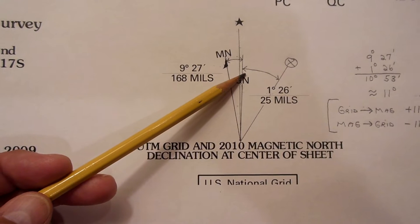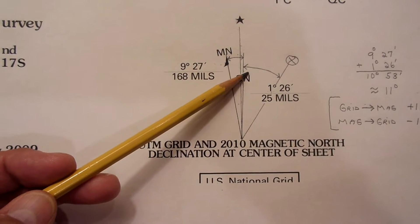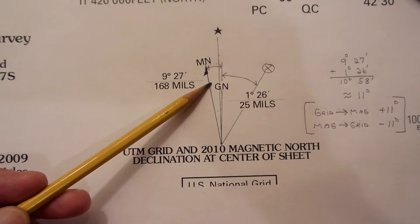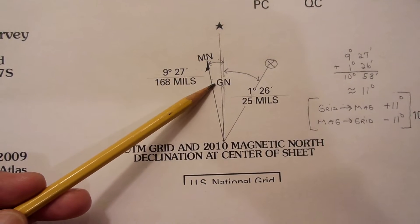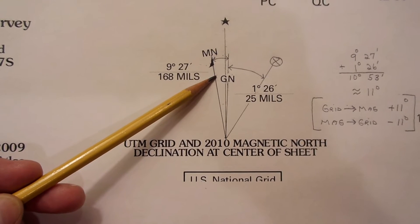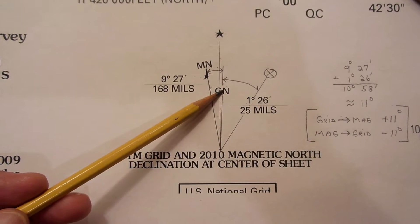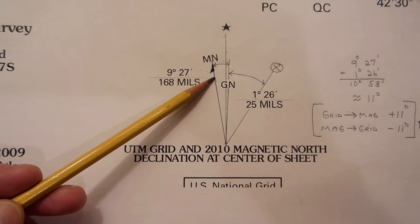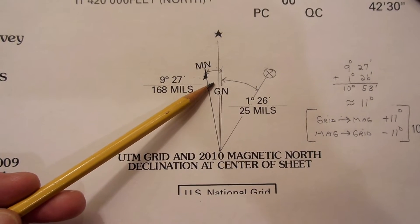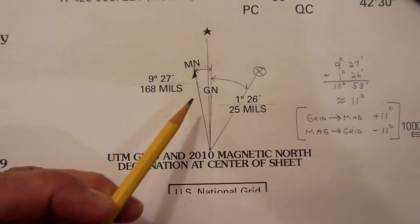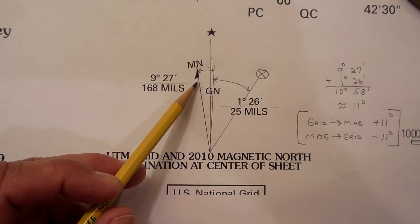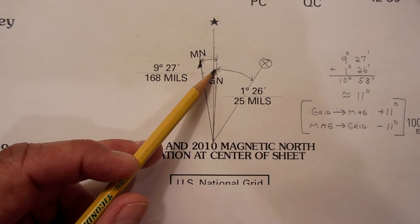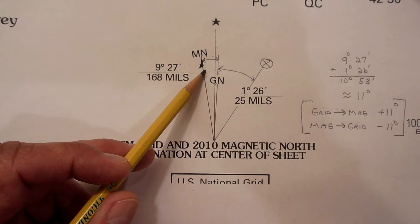So on this map grid north is slightly to the east of true north. But look at magnetic north. Magnetic north is 9 degrees and 27 minutes to the west of true north. So because grid north is to the east of true north and magnetic north is to the west, that means you have to add these two angles together to get the difference between grid north and magnetic north. In this diagram it equals 1 degree 26 minutes plus 9 degrees 27 minutes.